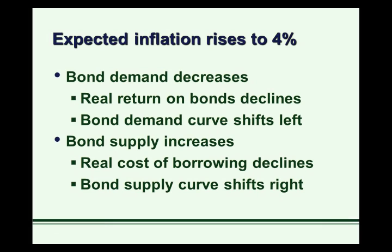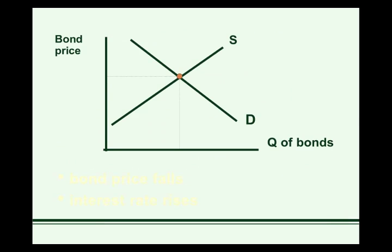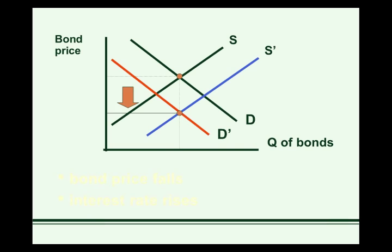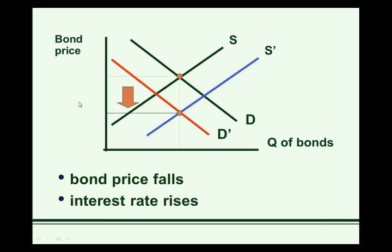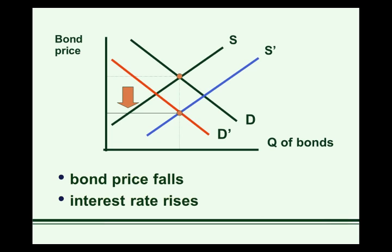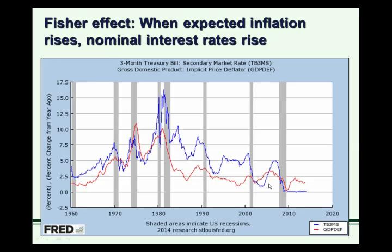So the bond supply curve is going to shift right. To see what happens to equilibrium, let's draw these changes on our bond market diagram. With higher inflation expectations, bond demand shifts left due to the lower real return, and bond supply shifts right due to the lower real cost of borrowing. Putting them both together, we definitely get a decrease in bond price. And if bond price falls, that means the interest rate is going to rise. Quantity is a little uncertain — the way I've drawn this graph, the shifts in supply and demand are about the same magnitude, so there's no change in quantity. If one of the shifts was larger, equilibrium quantity would change as well. But we definitely know the bond price falls and interest rates rise.